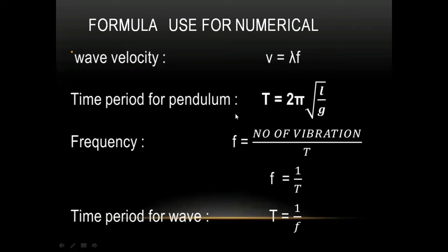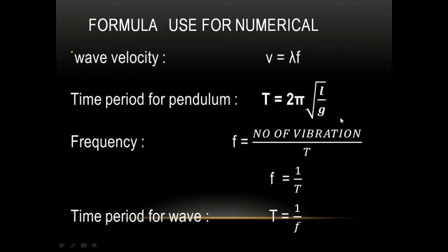The time period formula for a pendulum is T = 2π√(L/g), where T stands for time period, 2 is a constant, and π is a constant value equal to 3.14 or 22/7. L stands for the length from the point of suspension to the center of gravity of the sphere. The small g stands for acceleration due to gravity, which is a constant — we take 10 or 9.8 m/s².